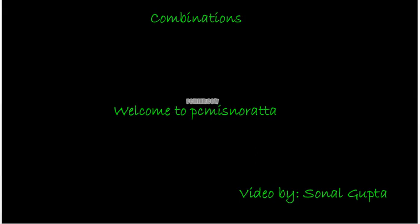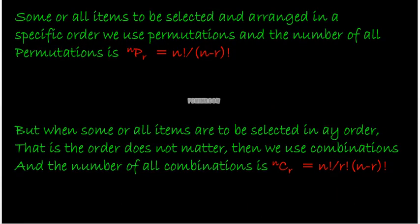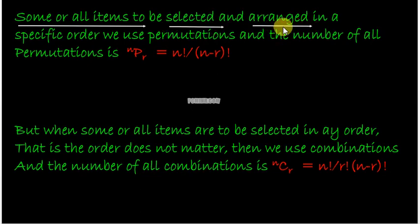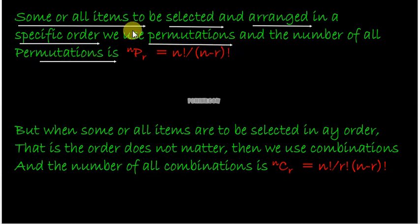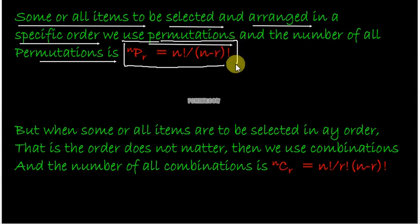Hello and welcome to PCMS Noorata. You're watching this video on combinations by Sonal Gupta. Before combinations, you have learned that if some or all items are to be selected and arranged in a specific order, we use permutations. The number of all permutations is given as NPR, which is equal to N factorial upon N minus R factorial. So we use permutations when we want to select some objects and also arrange them in a specific order.